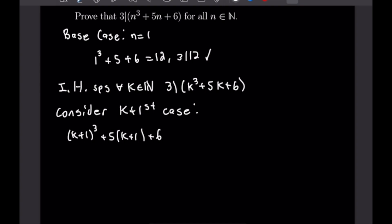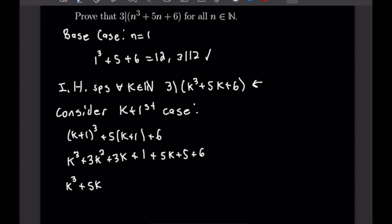Cubing k plus 1 gives k cubed plus 3k squared plus 3k plus 1, and multiplying 5 by k plus 1 gives 5k plus 5, so the full expression is k cubed plus 3k squared plus 3k plus 1 plus 5k plus 5 plus 6. We rearrange to group terms that resemble our induction hypothesis: k cubed plus 5k plus 6, and then separately 3k squared plus 3k plus 12.